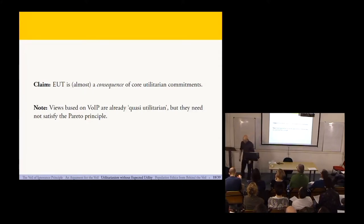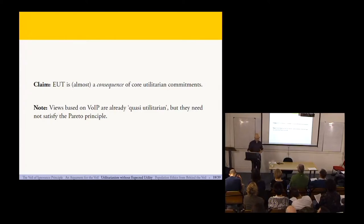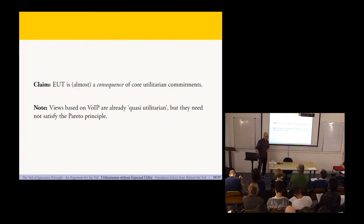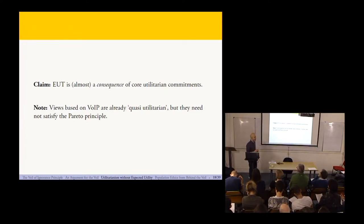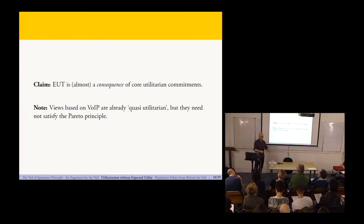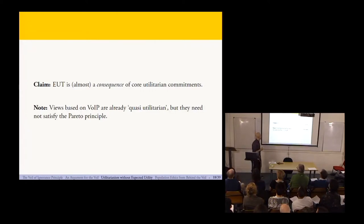What I want to explain is that expected utility theory is just about a consequence of core utilitarian commitments, rather than a presupposition. Instead of assuming expected utility theory in Harsanyi's argument, we can instead adopt things which are more clearly utilitarian commitments and then derive something like expected utility theory. One step along this direction: we've already seen that in getting the veil of ignorance principle, I've adopted certain axioms which are plausibly utilitarian in nature. So any theory of impartial value that arises from the veil of ignorance is utilitarian, or quasi-utilitarian, with these different quasi-utilitarian theories corresponding to different theories of individual value. However, these quasi-utilitarian theories need not satisfy the Pareto principle — and that's going to be the key to understanding what's going on here.